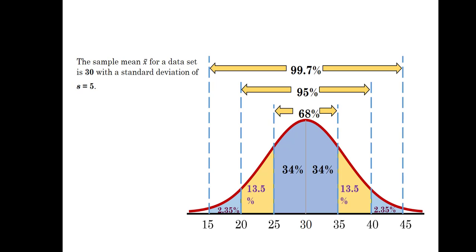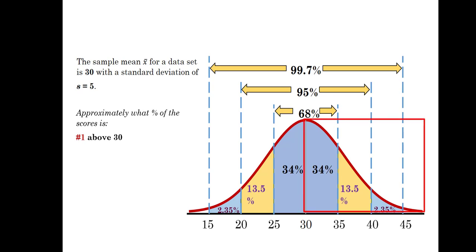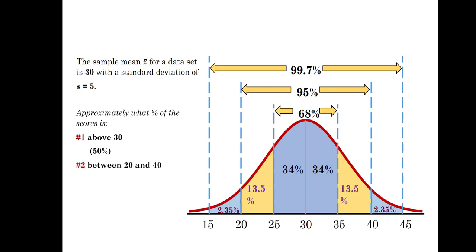Now we can use the segments we have divided to answer any question about the area between two points, above a point, or below a point. For example, if we're asked approximately what percent of the scores is above 30, we locate 30 — above it to the right will be everything from the center upward — so that will be approximately 50 percent.